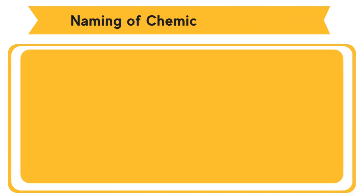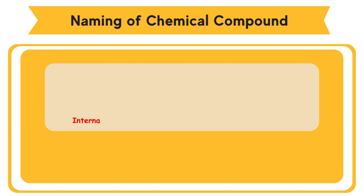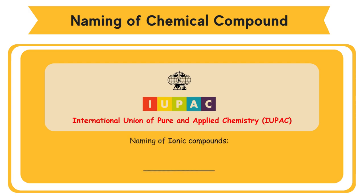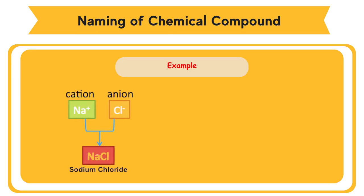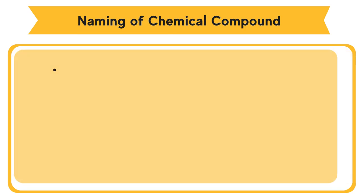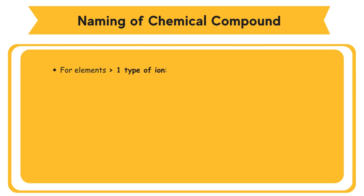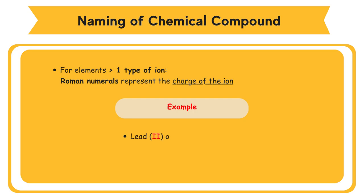Naming of chemical compounds. Chemical compounds are named systematically according to the guidelines given by the International Union of Pure and Applied Chemistry, IUPAC. Naming of ionic compounds: the name of the cation is written first, followed by the name of the anion. Examples: sodium chloride, magnesium hydroxide. For elements that form more than one type of ion, Roman numerals such as I and II are used to represent the charge of the ion. Example: Lead(II) oxide shows Pb²⁺ ion; Lead(IV) oxide shows Pb⁴⁺ ion.